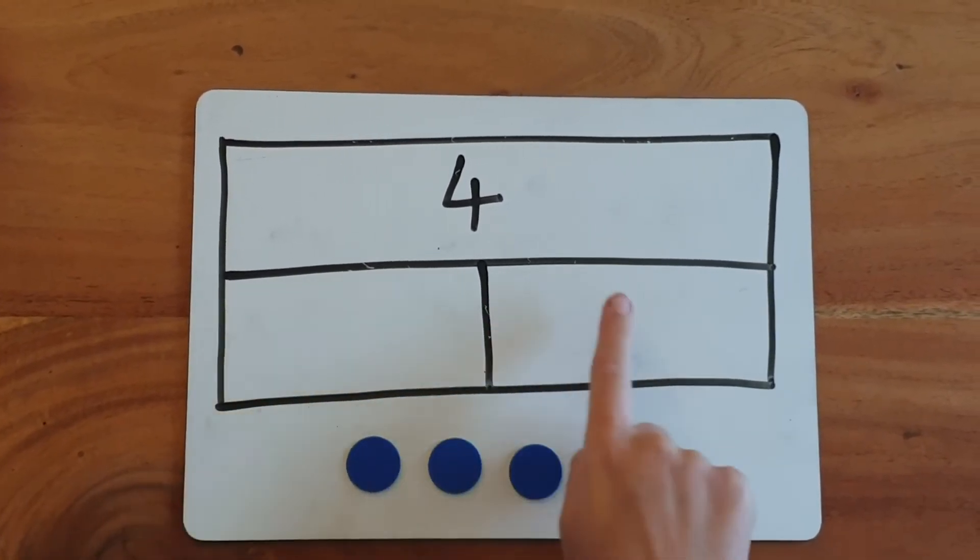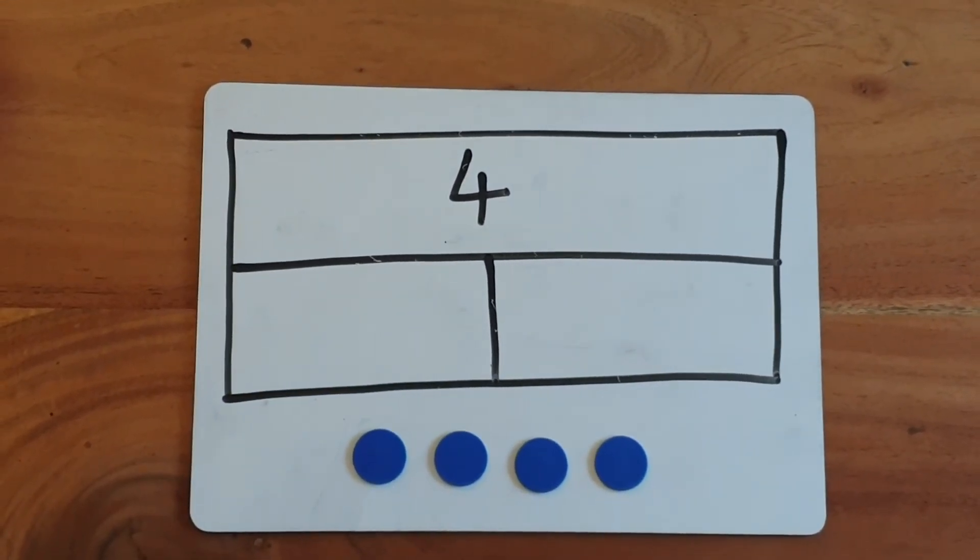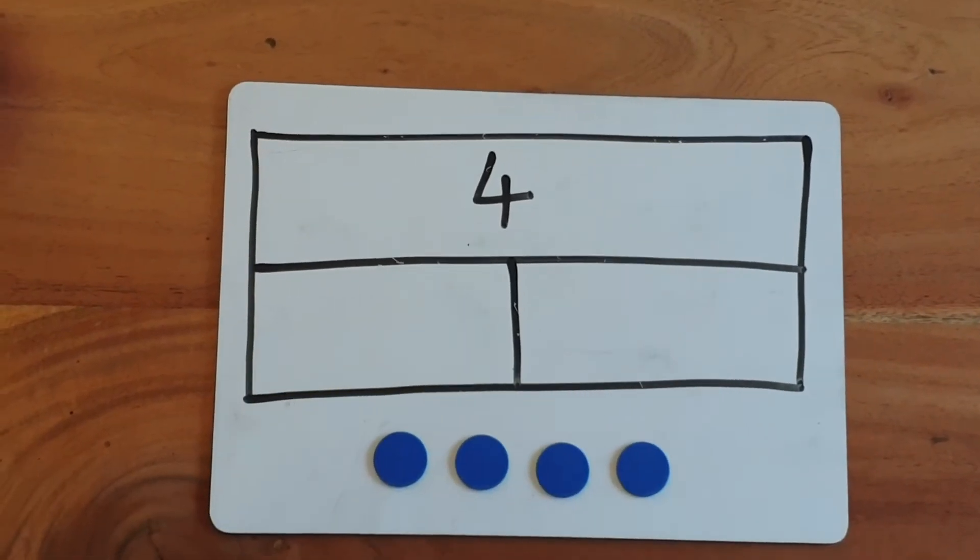Now that I've got my four counters, I'm going to share them into these two groups so that we end up with half on this side and half on this side.